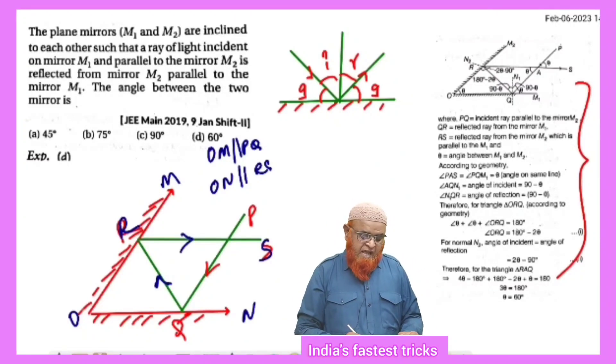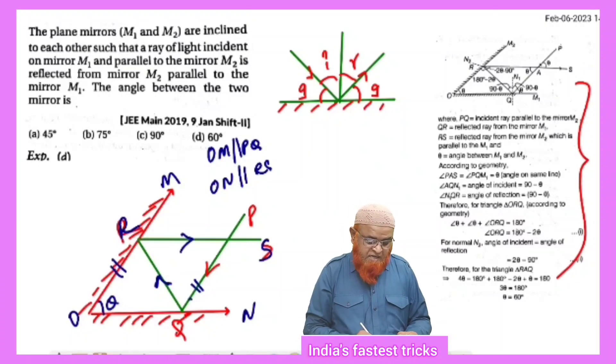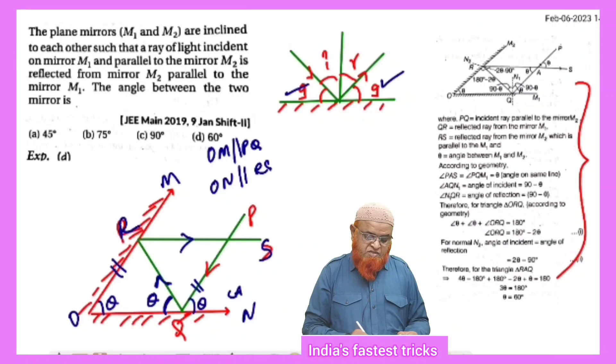As PQ and OM are parallel, we can write this is angle theta, which means this is also angle theta. These are called corresponding angles. If this is theta, this is also going to be theta because these two are called glancing angles.